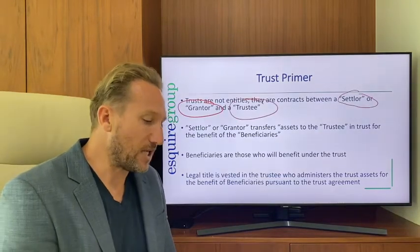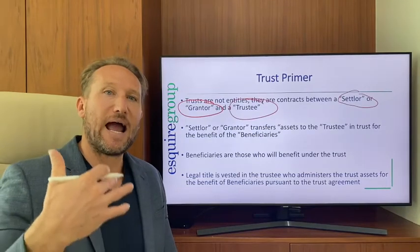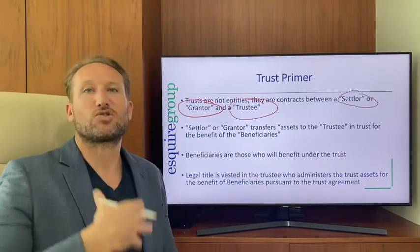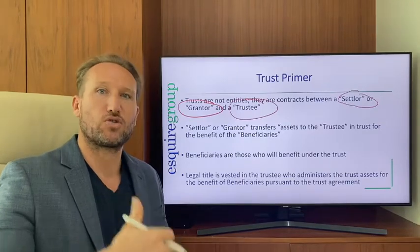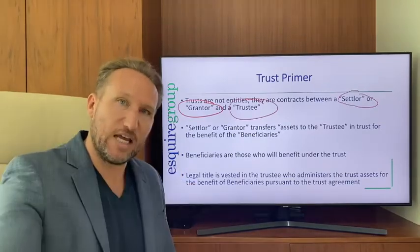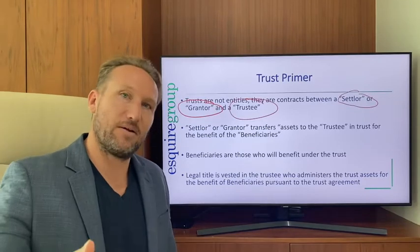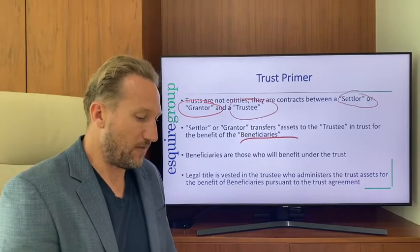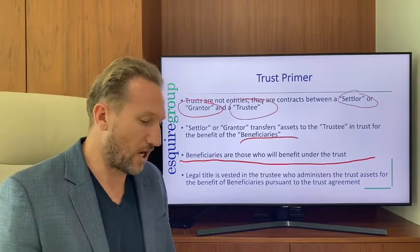The settler or grantor is the one who transfers assets into the trust — meaning they transfer assets to the trustee to administer those assets for the benefit of the beneficiaries. The beneficiaries are those who are going to benefit under the trust.